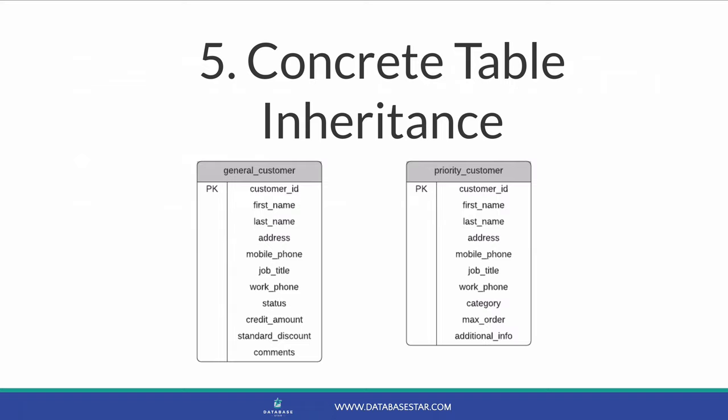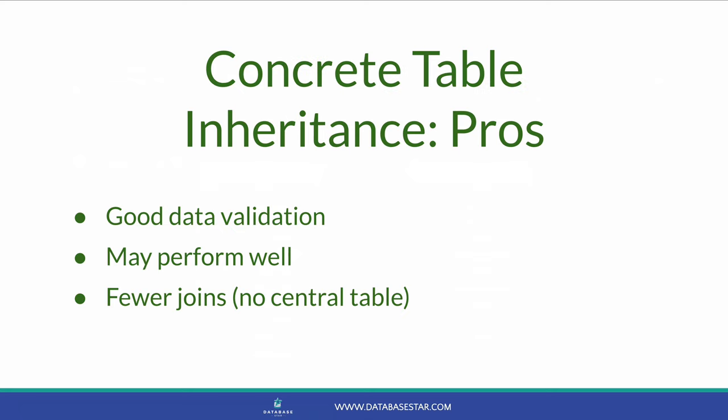Solution number 5 is another one by Martin Fowler called Concrete Table Inheritance. It's similar to Class Table Inheritance, except with one key difference: there is no master or main table to store core data for a record — each record type has all of the attributes it needs. In this example, there is no central customer table; each of the other tables has all of the data it needs, such as names. Just like some of the other designs, it has good options for data validation using inbuilt validation for data types and constraints. It may also perform pretty well, as you can index columns and avoid the subqueries required by EAV. You also don't need to join to a central table — you can get everything from a single table.